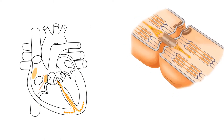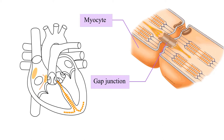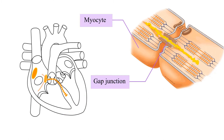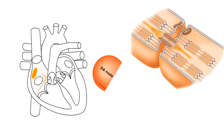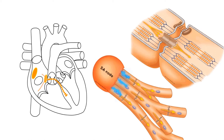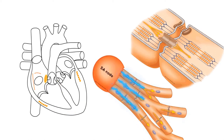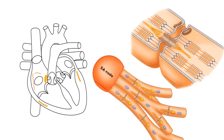Contractile cells of the heart, known as myocytes, are linked together by gap junctions that have an opening so the contents of the cytoplasm of one cell can travel to the neighboring cell. As a result, an action potential, or electrical current, is able to spread from one cell to the neighboring cell through the gap junctions. When the sinoatrial node sends out an electrical stimulus causing an action potential in surrounding cells, the action potential travels to neighboring cells until it has passed through all the contractile cells of the heart.